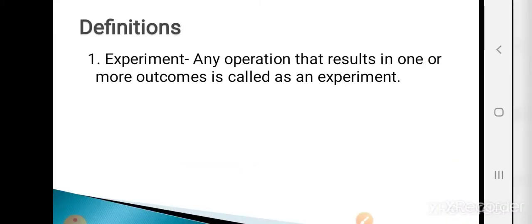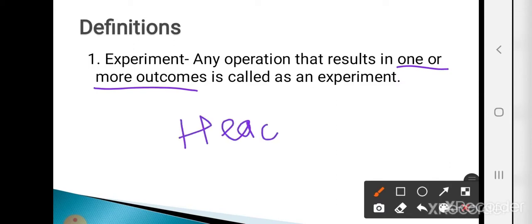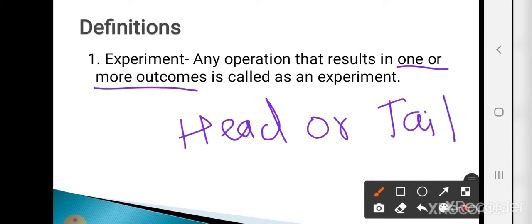The first definition is experiment. Any operation that results in one or more outcomes is called an experiment. For example, suppose you are tossing a coin. The outcomes are either head or tail. So here the operation having two outcomes — head or tail — is called the experiment.